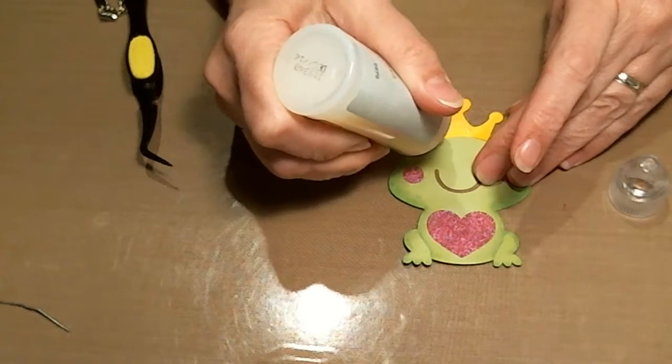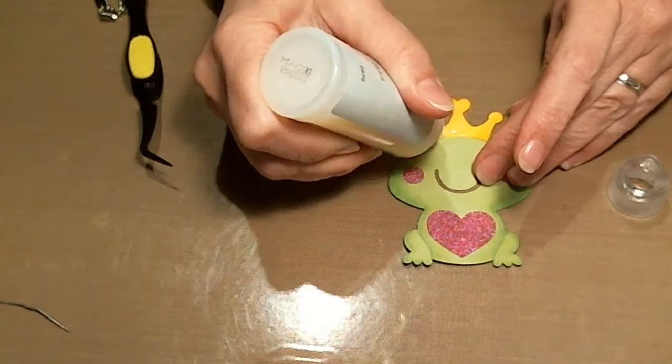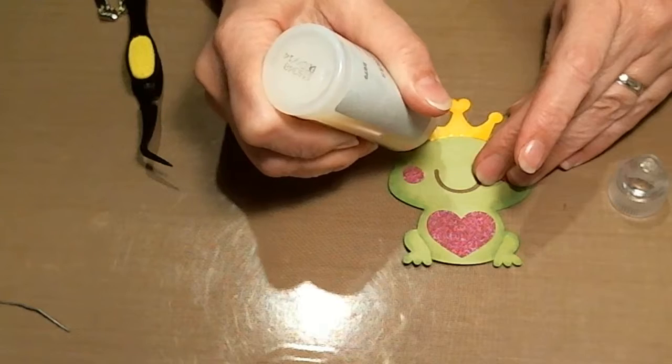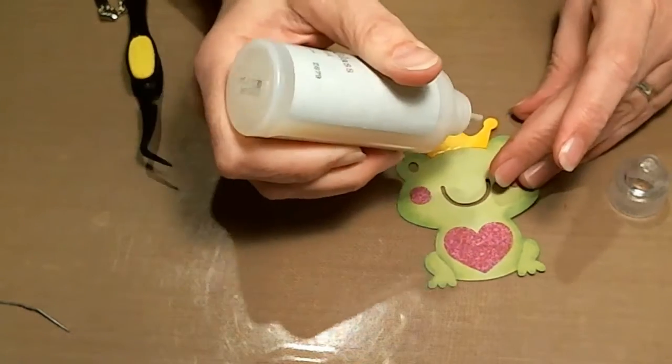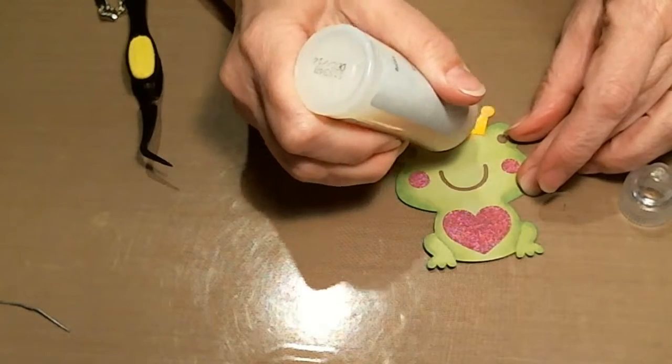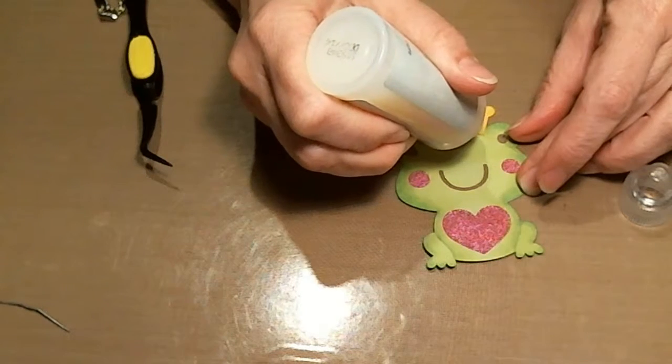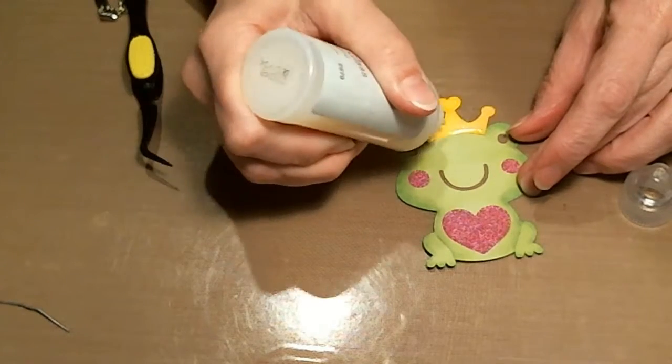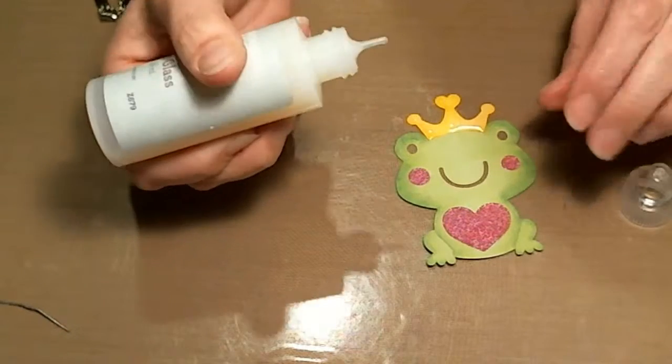Liquid Glass is a similar product to Ranger's Glossy Accents. I got a nice thick coat of this, which will give it a lot of dimension and really make it stand out. You have dimension in the glittered cardstock for his cheeks and heart, dimension on the crown, and the body has depth with the Copic coloring, so this really gives this little froggy a lot of character.